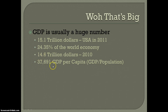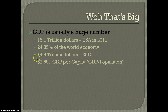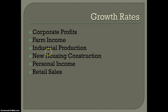So if you broke down that 15.1 trillion to every person living in the United States, this is the number you'd get. For example, why is this important? China has a very large GDP, but they have a much larger population than us. So if you look at their GDP per capita, it's way smaller than it would appear if you just looked at their actual GDP, because they have such a high population.